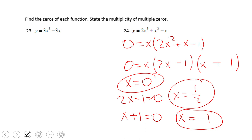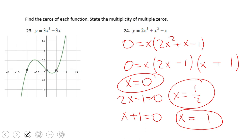If you have these zeros for number 24—x equals zero, x equals one-half, and x equals negative one—you did a wonderful job. Let's see the graph. You see those zeros here: negative one, zero, one-half. The multiplicity of each one is one, and we see that also in how the graph behaves. It crosses at negative one because the multiplicity is one, crosses at zero with multiplicity one, and crosses at one-half.